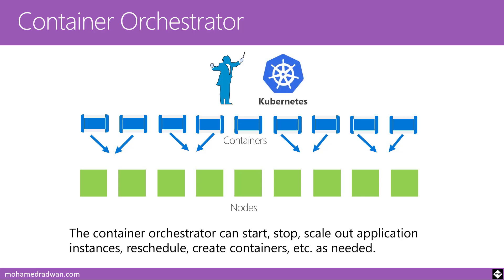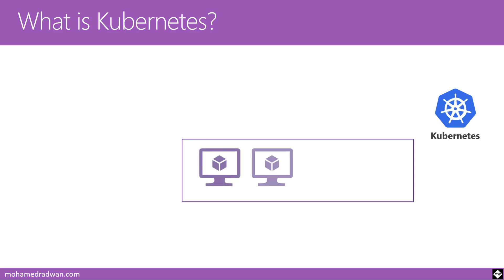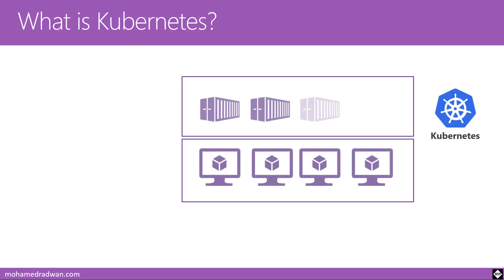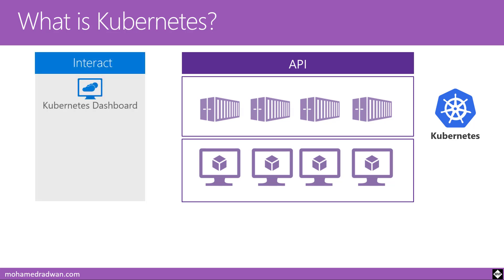A great example of a container orchestrator is Kubernetes. Kubernetes is an open-source container orchestrator designed to automate deployment, scaling, and management of containerized applications. It was originally developed by Google, coming from the Borg project, and donated to the Cloud Native Computing Foundation in 2014. Think of Kubernetes as a bunch of virtual machines running containers that expose an API to manage those virtual machines and containers.